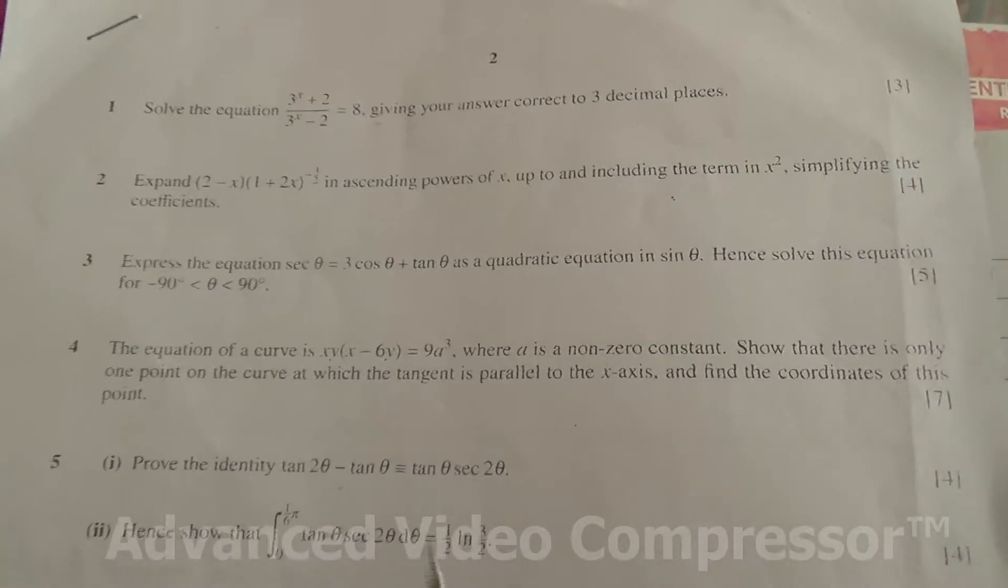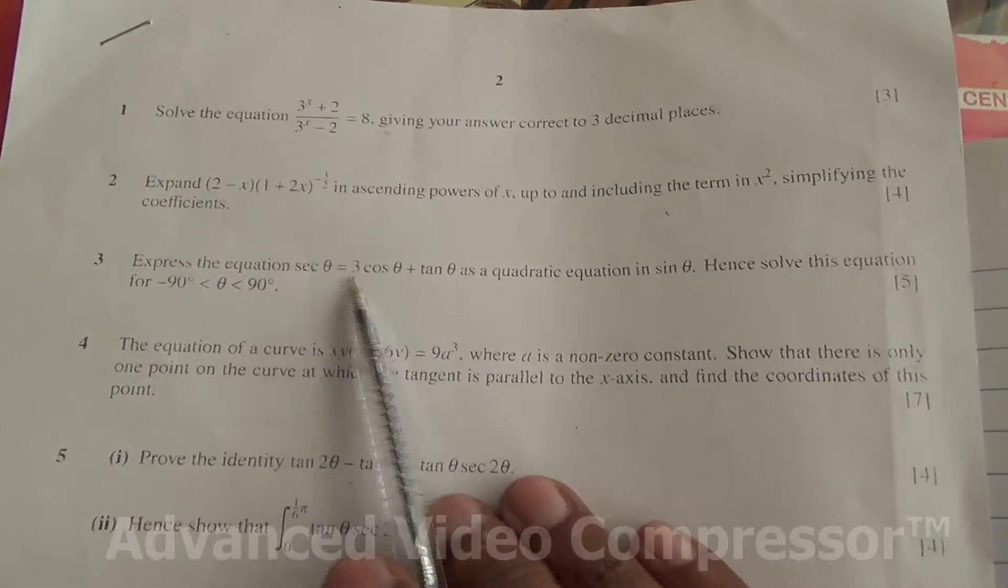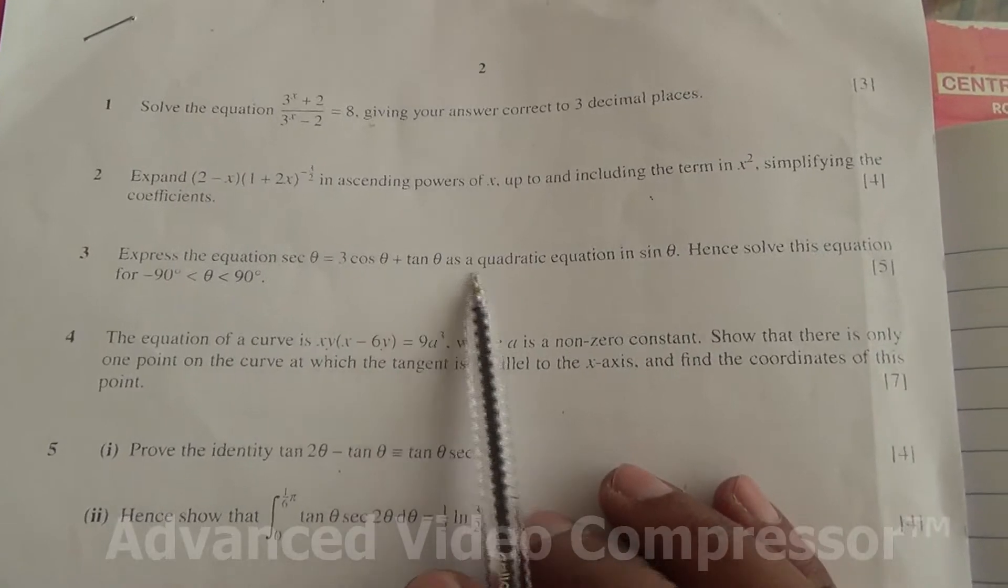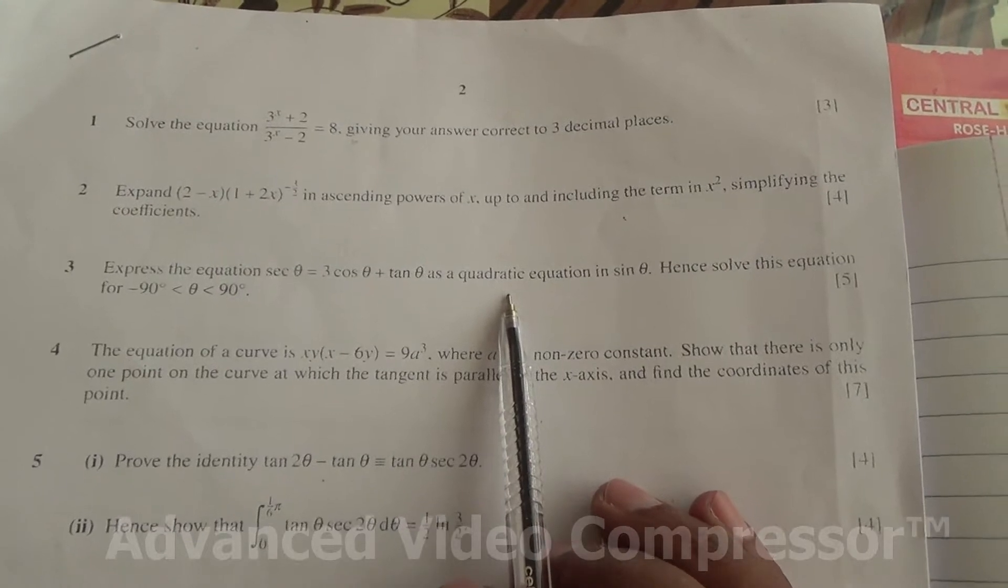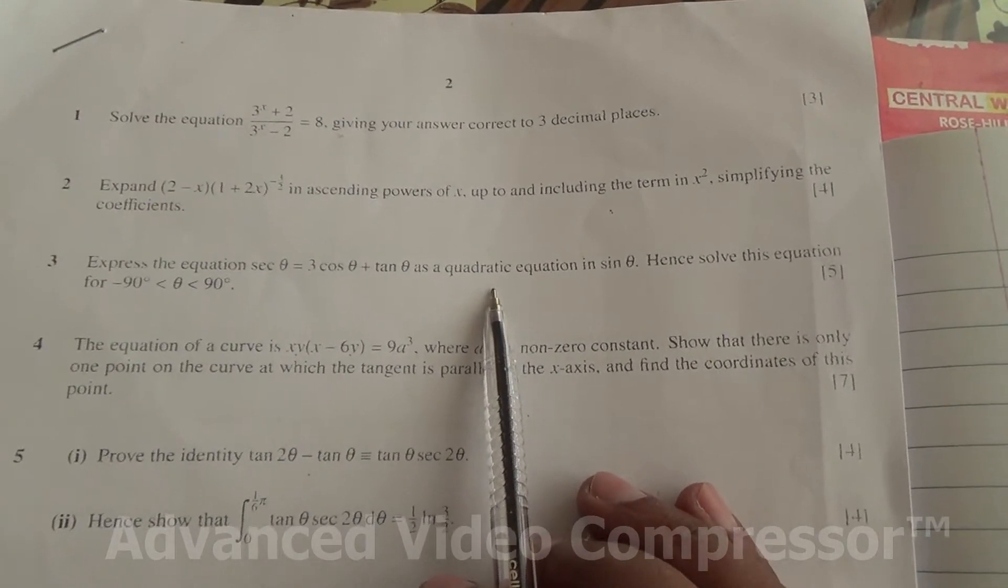Hi, question number 3. Express the equation sec theta equals 3 cos theta plus tan theta as a quadratic equation in sine theta. Hence, solve the equation for minus 90 to 90 degrees.